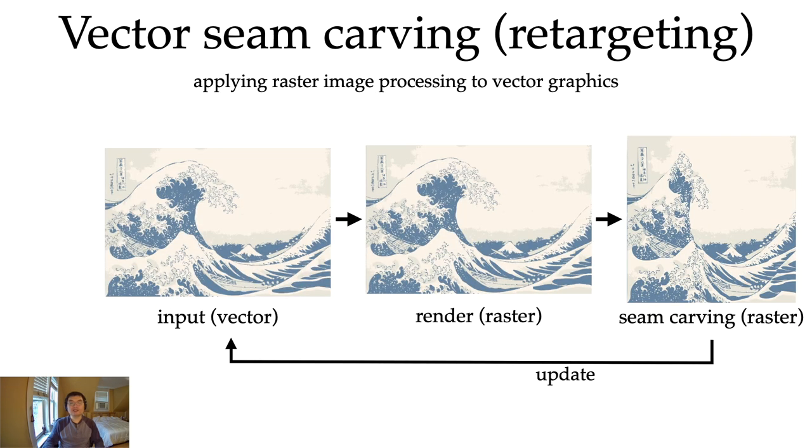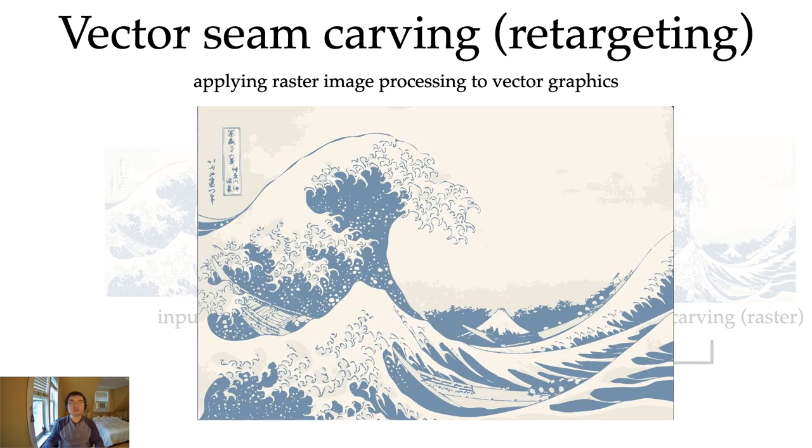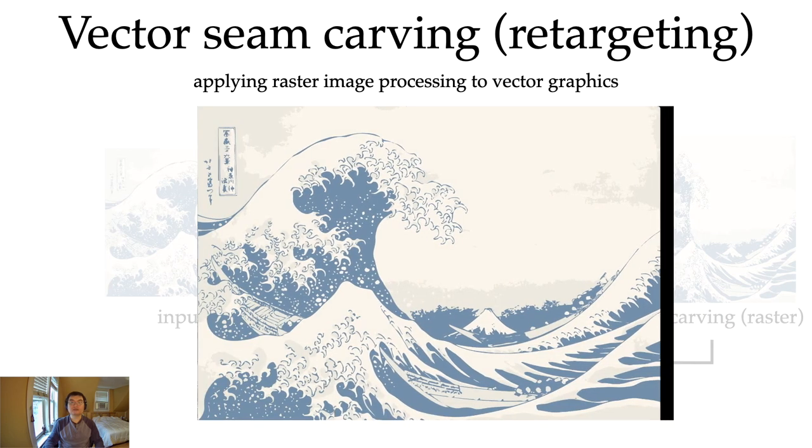We can also apply image processing operators on the raster render and propagate the change back to the vector graphics. One example of this is seam carving, which is an image processing operator that changes the aspect ratio of the image by removing pixels. We take an input vector graphics when we render it and then we apply one step of seam carving. And then we propagate the change back to the input using gradient descent. And then we repeat this process. So here's a video showing the optimization process.